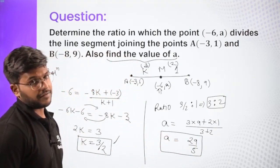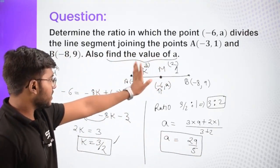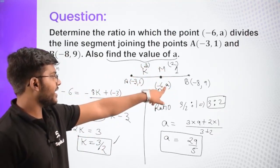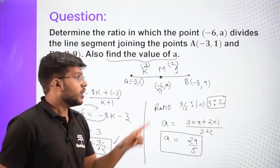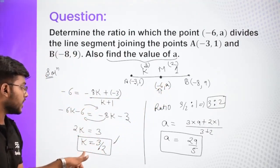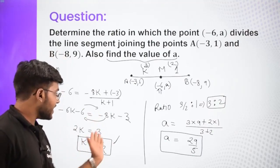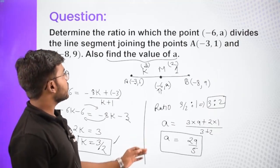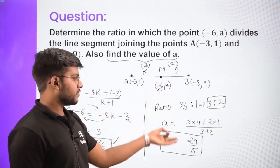Now to find the value of a: since the ratio is 3:2, apply the section formula for the y-coordinate. a = (3·9 + 2·1) / (3 + 2) = (27 + 2) / 5 = 29/5. So the value of a is 29/5. Whenever we have to find ratio, assume K:1; and once the ratio is found, use the other coordinate's formula to find the unknown coordinate.